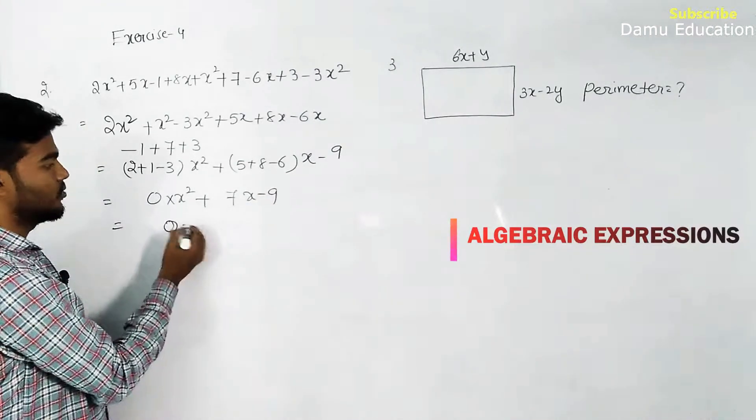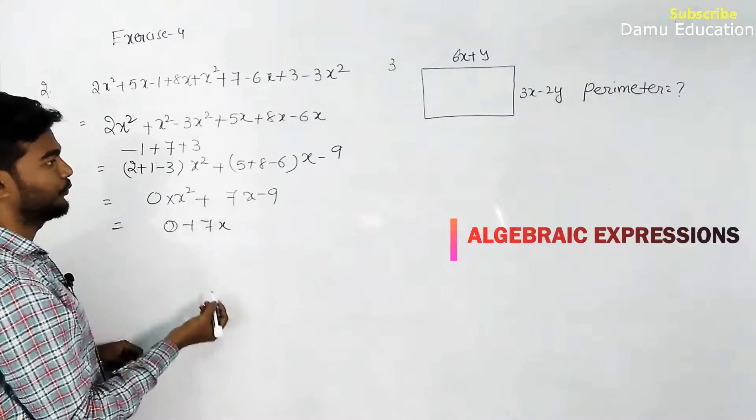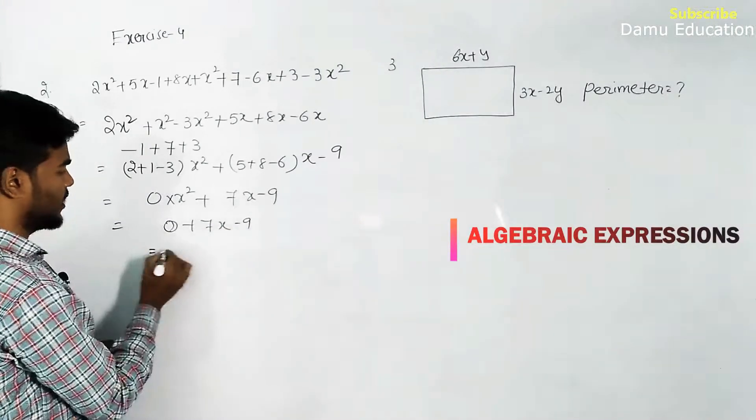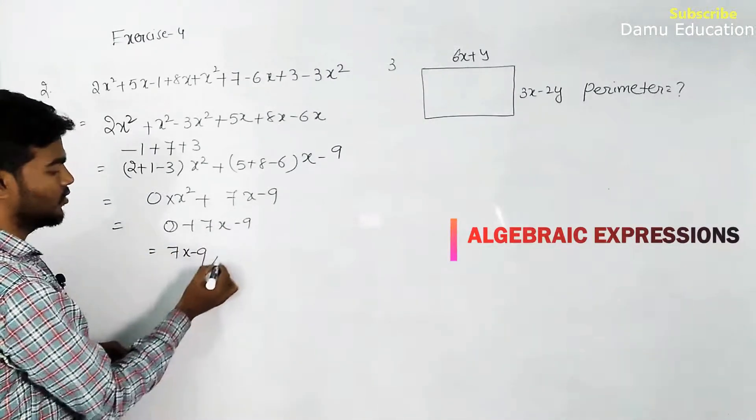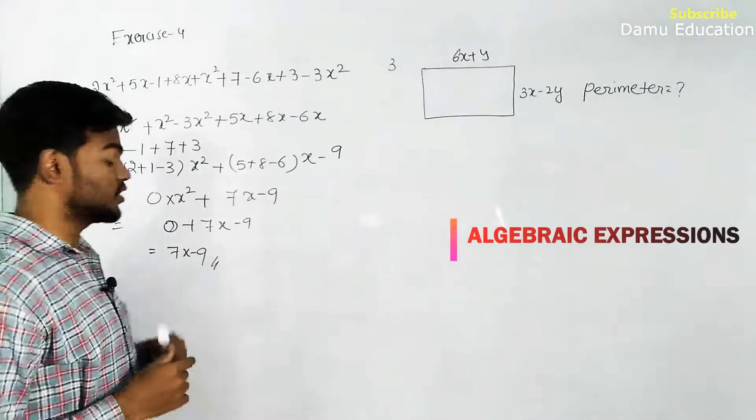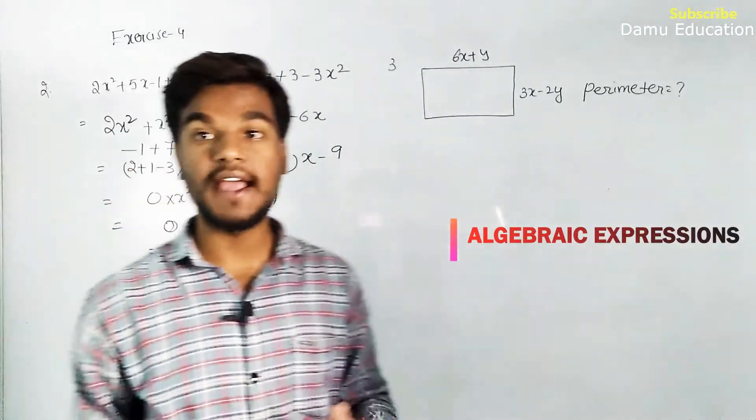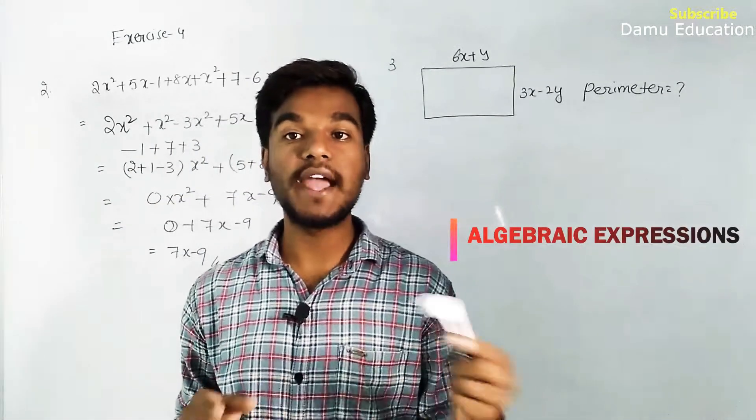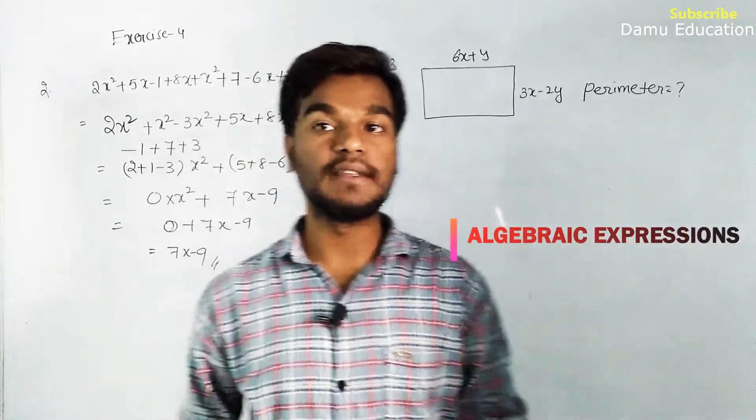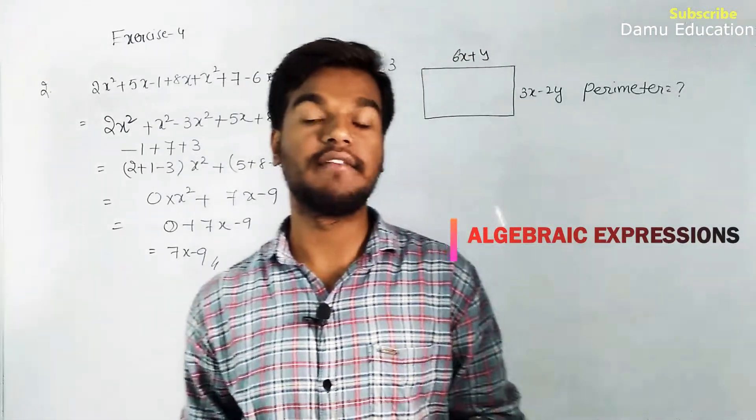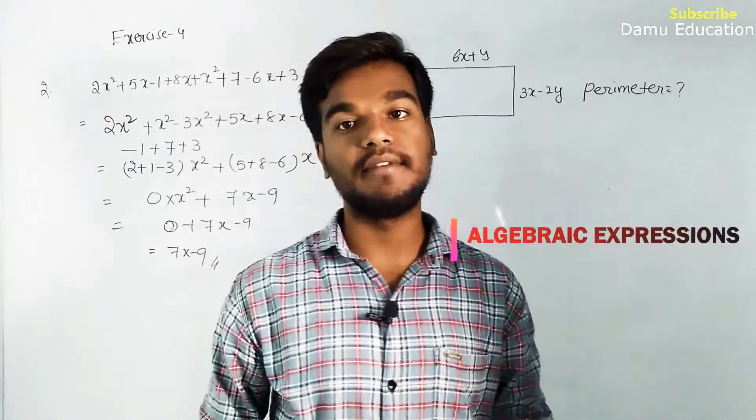Now 0 into anything is 0, so finally we got 7x minus 9. After simplification we got the answer as 7x minus 9. This is simplified because there are no like terms remaining in the given expression. That is the meaning of simplification.